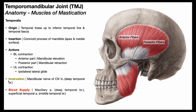All four muscles of mastication are innervated by the same nerve — the mandibular nerve. Cranial nerve 5, the trigeminal nerve, has three major branches: V1 (the ophthalmic nerve), V2 (the maxillary nerve), and V3, which is the motor component — the mandibular nerve. When we say mandibular nerve here, we mean the major branch of the trigeminal nerve, not the branch of the facial nerve. Off the mandibular nerve come the deep temporal branches, which innervate the temporalis muscle.